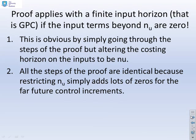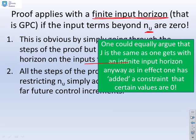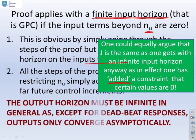Now the proof will also apply if you have a finite input horizon. That is what you have in GPC because essentially the input horizon was nu. You could equally argue that J is the same as one gets from an infinite input horizon anyway as in effect all you've done is added a constraint that certain values are zero. But I'm going to leave that to you because that's really straightforward to show.